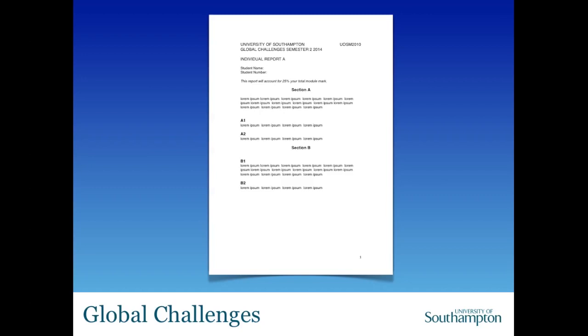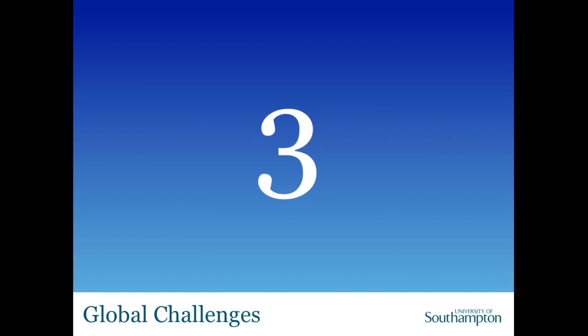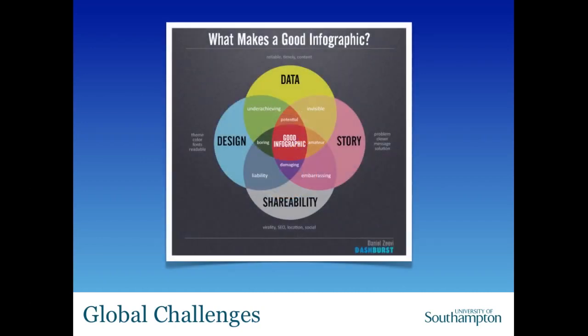For the second assessment, we'll have a more flexible format where you can write a longer or more critical piece. The third element — the first component of your group work — is a poster, or perhaps more accurately an infographic. An infographic is a way of representing some information, and what I want you to do in groups is take one or more of the global challenges and effectively communicate it to a person in the general public, in the context of the global challenges and the context of systems.